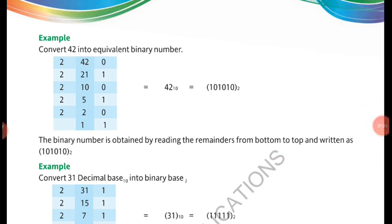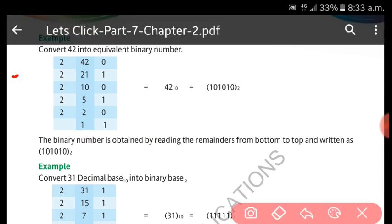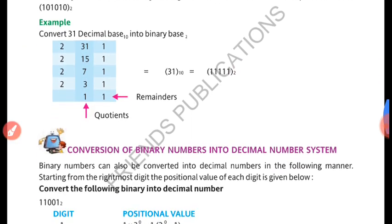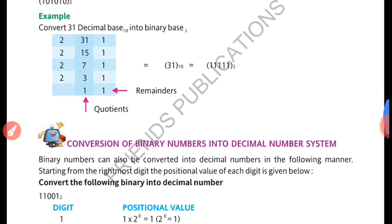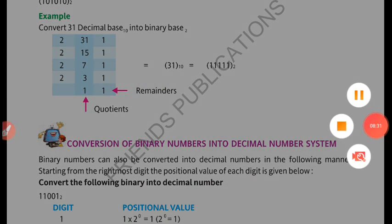Let us see one more example: convert 42 to binary. We use the same process — keep dividing by 2 and write the remainders from bottom to top. 42 divided by 2 gives 21 remainder 0. 21 divided by 2 gives 10 remainder 1. 10 divided by 2 gives 5 remainder 0. 5 divided by 2 gives 2 remainder 1. 2 divided by 2 gives 1 remainder 0. 1 cannot be divided further, so remainder is 1. The rest will be discussed in the next part — thank you for watching.